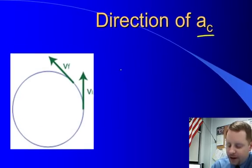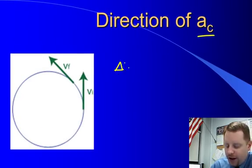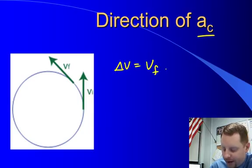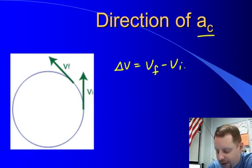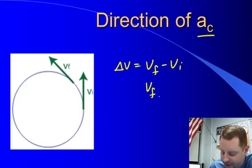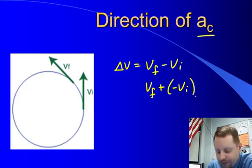Our acceleration is going to be related to the change in velocity, delta v, which is always the final value minus the initial value. Well, we could rewrite that to say that is final plus the opposite of the initial. Now, when we look over here at our vectors,